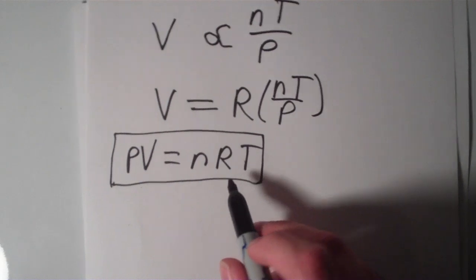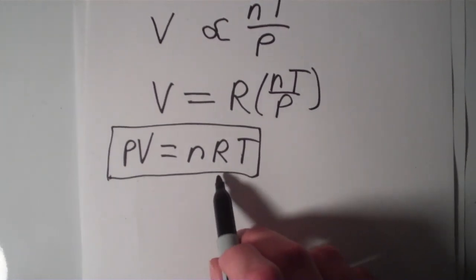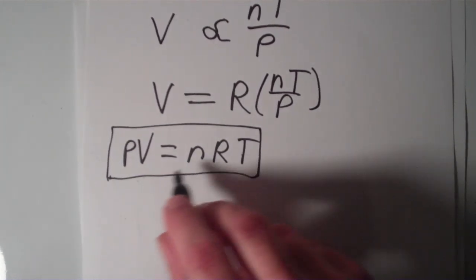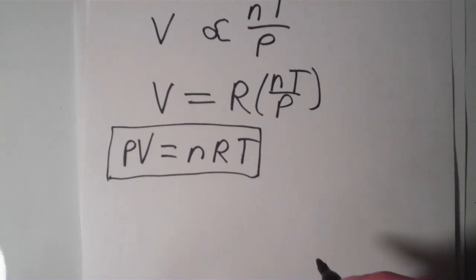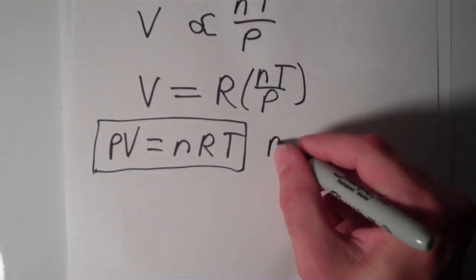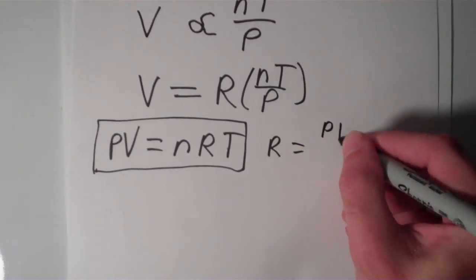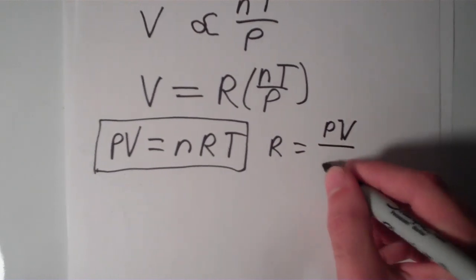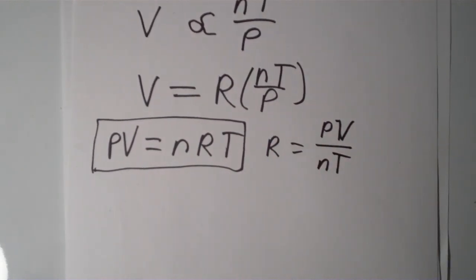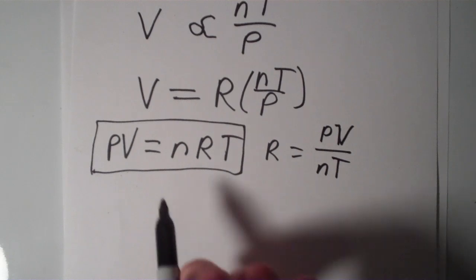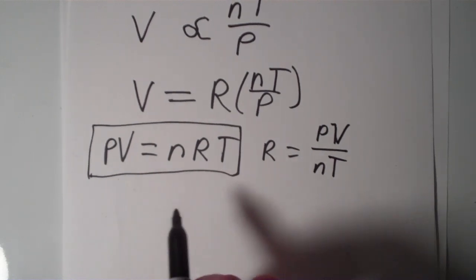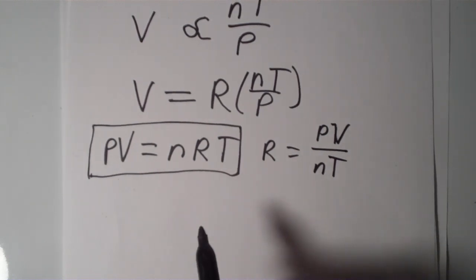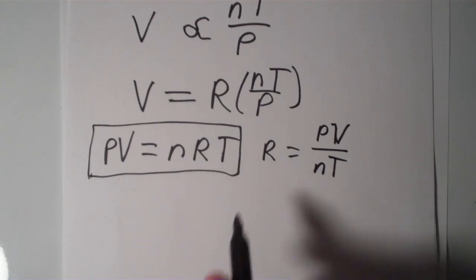So the constant R, this is what we call the ideal gas constant. And if we arrange this equation and divide both sides by nT, we'll get that R is equal to PV over nT. Again this is just dividing both sides of PV equals nRT by nT to get R all by itself.